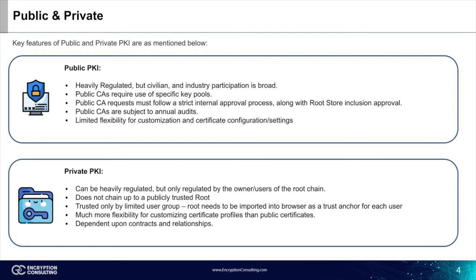Now we're going to go over each of these types of PKI in detail. This slide shows public and private PKI information. For public PKI: it is heavily regulated, but civilian and industry participation is broad. Public CAs require use of specific key pools. Public CA requests must follow a strict internal approval process along with root store inclusion approval. Public CAs are subject to annual audits, and limited flexibility for customization in certificate configuration or settings is provided.